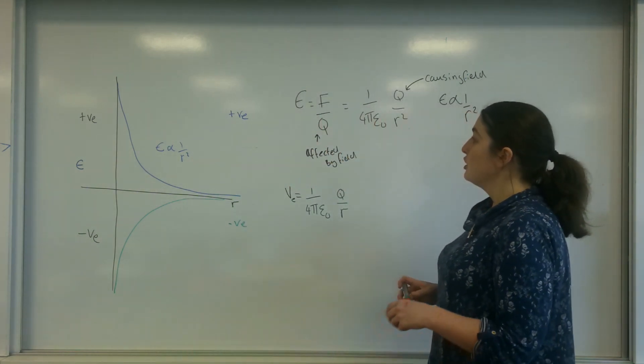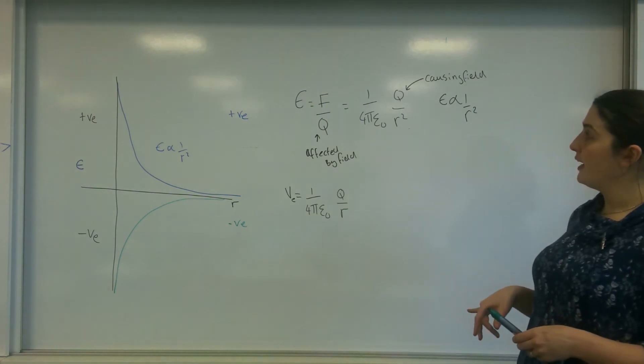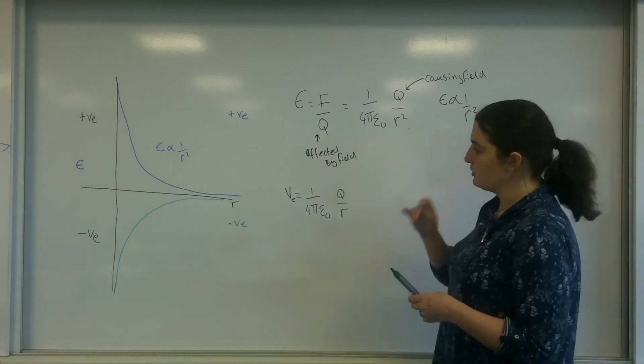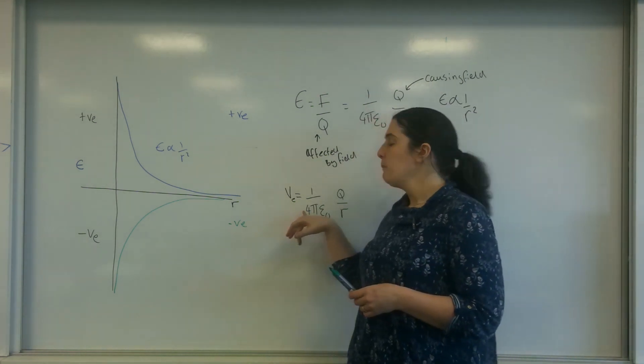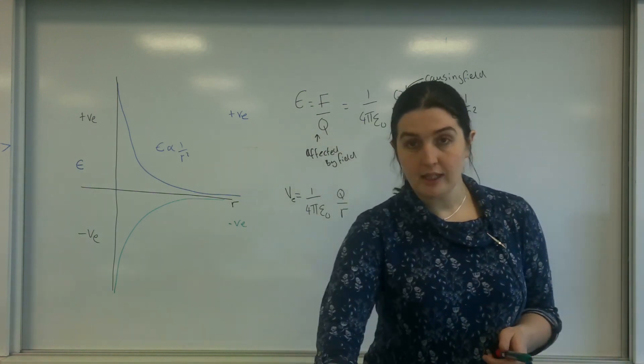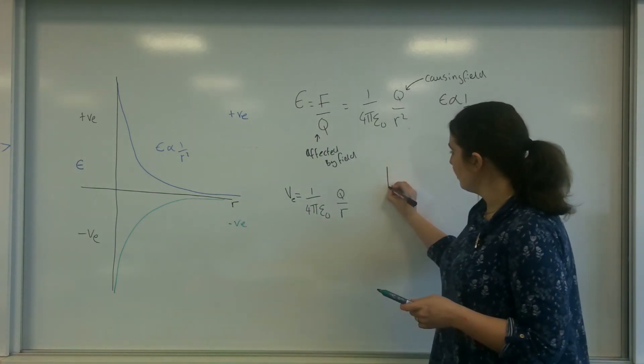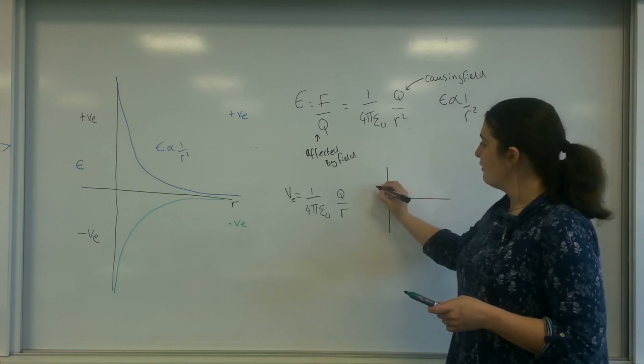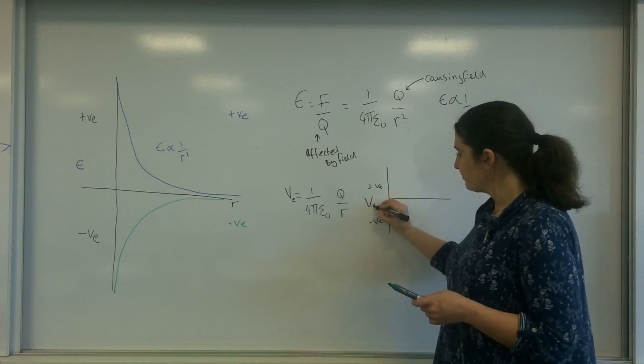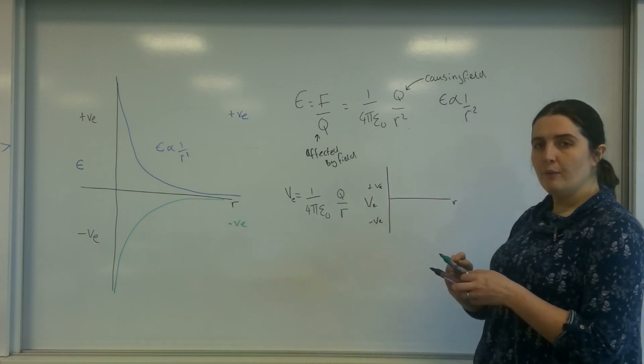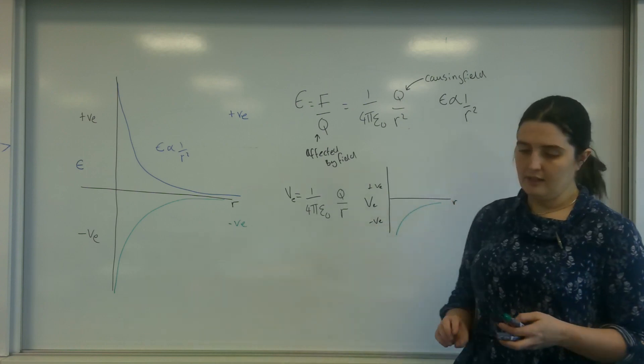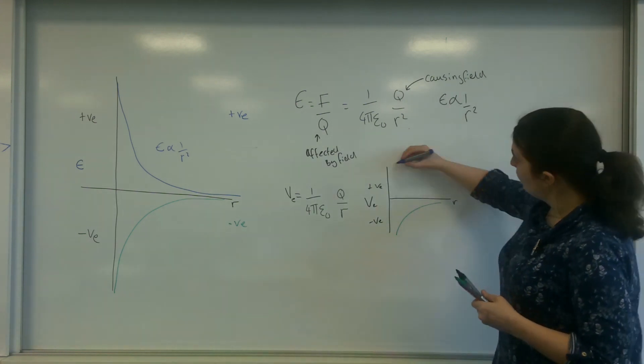So that there is field strength. Now what I want you to do here is I actually want to look at this idea of potential. Potential is 1 over 4 pi epsilon 0 q over r. And again, much like the argument here, if I have positive and negative potential and r, I would have a similar thing here. I would have a negative and I would have a positive here.